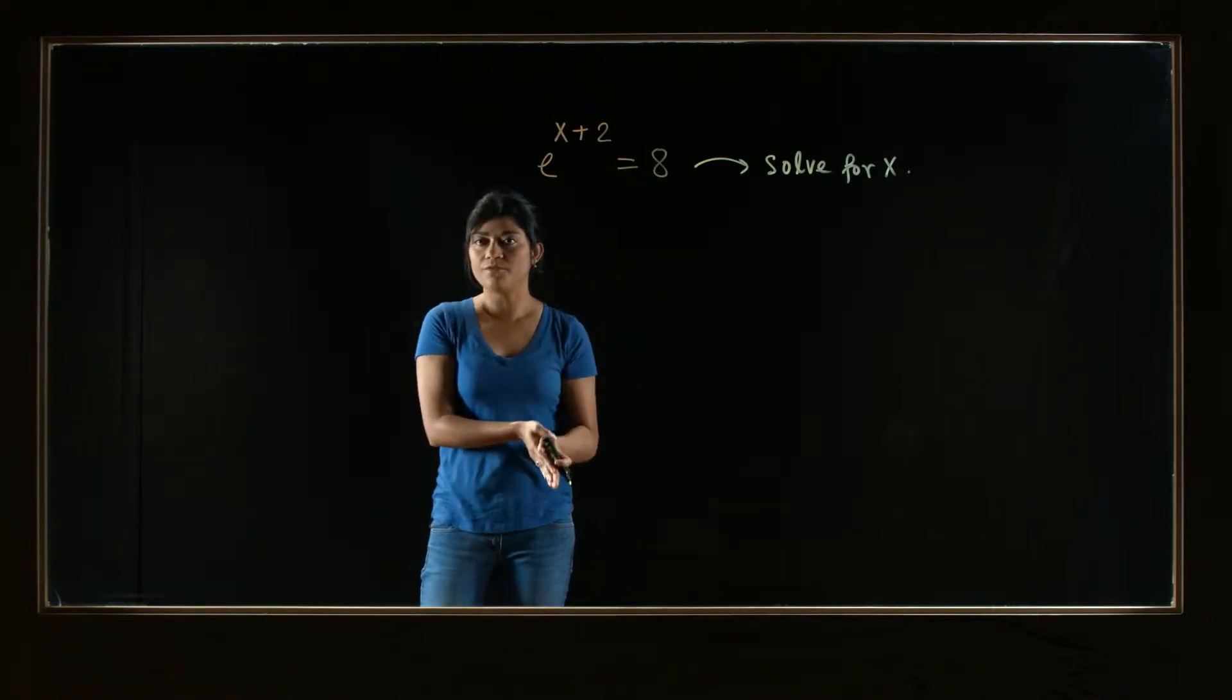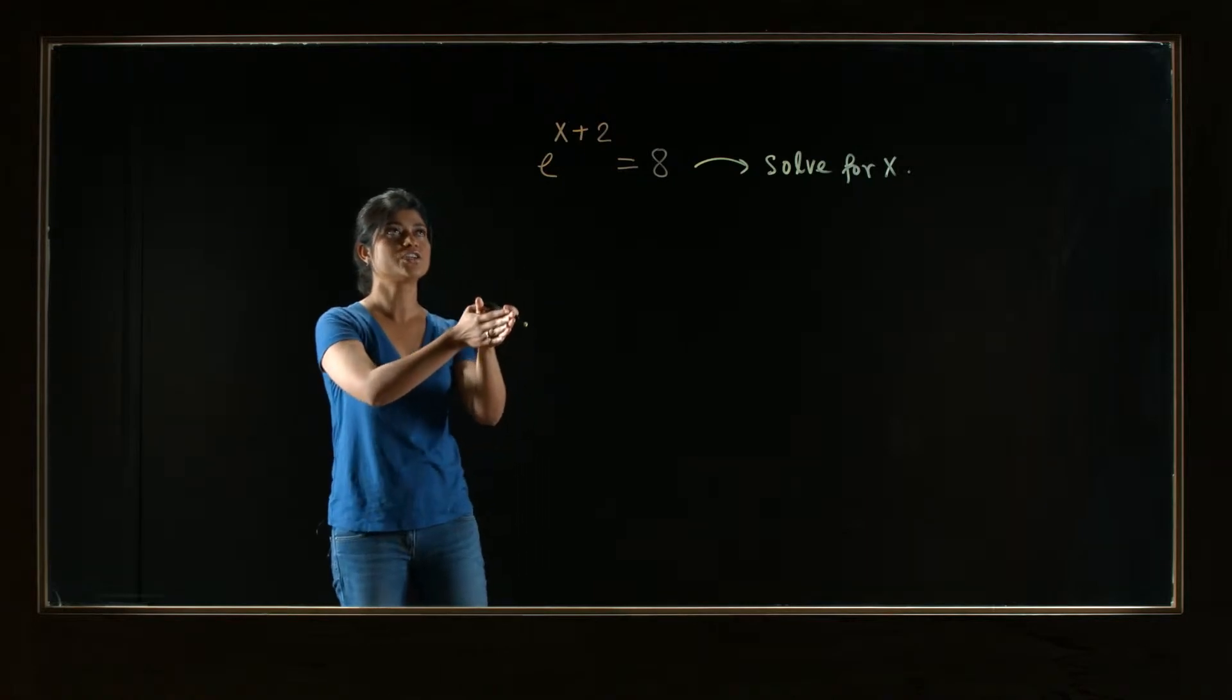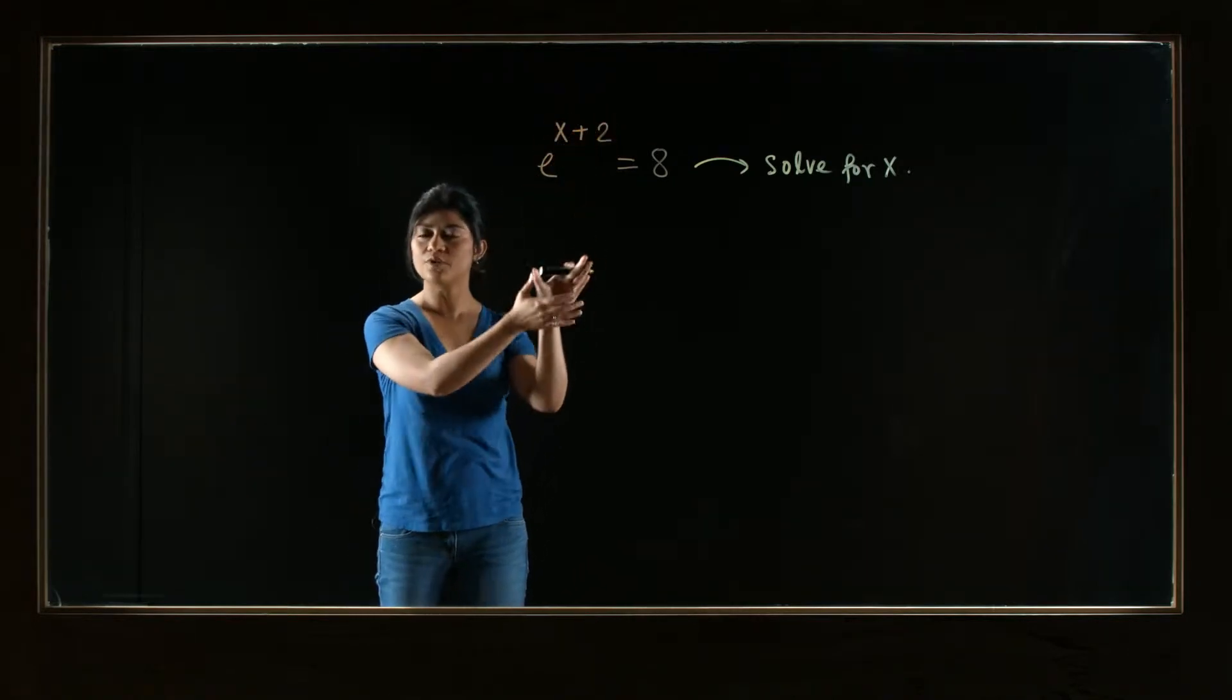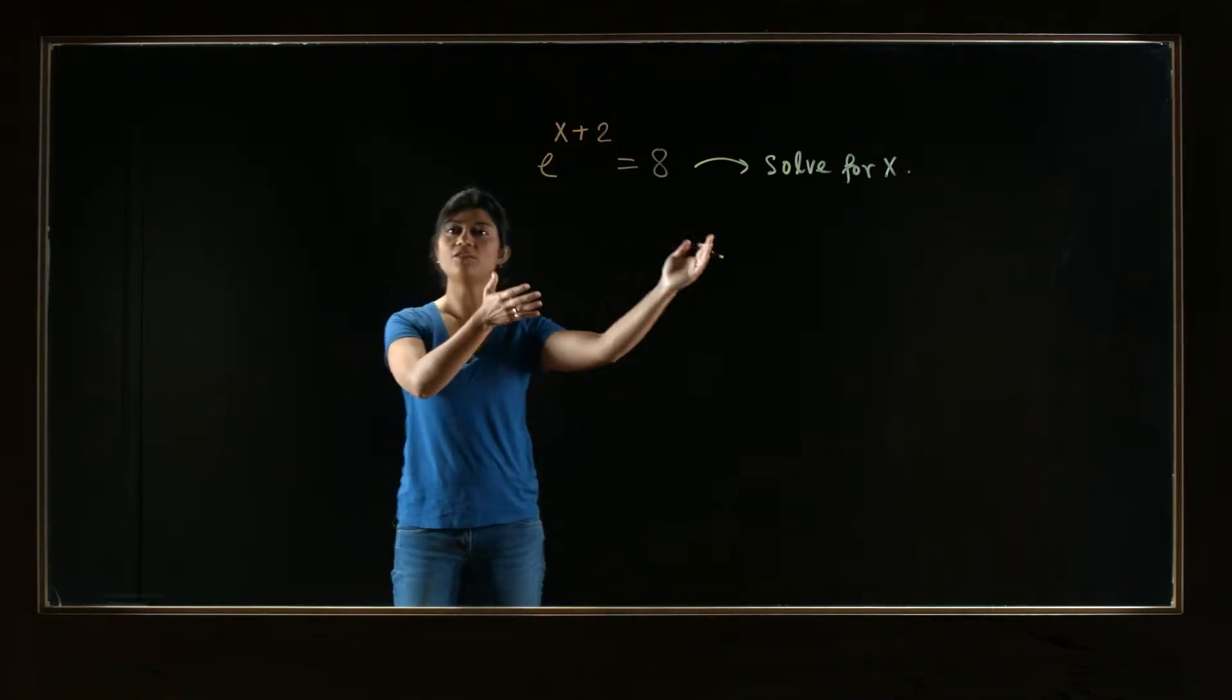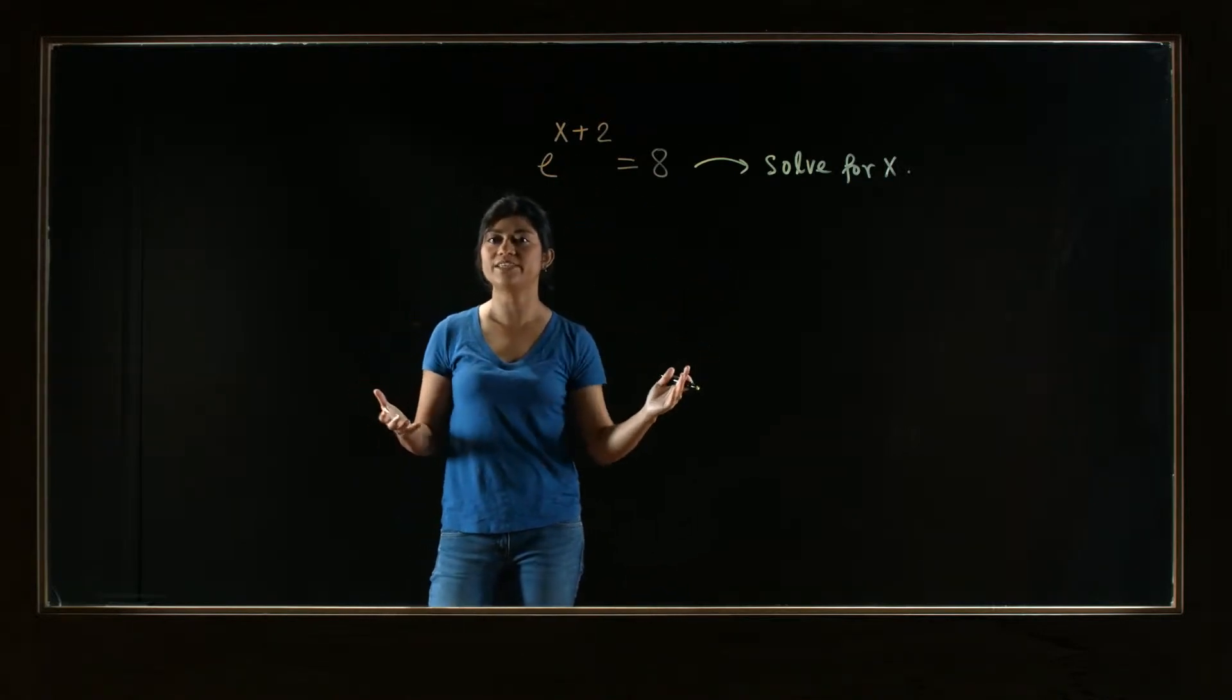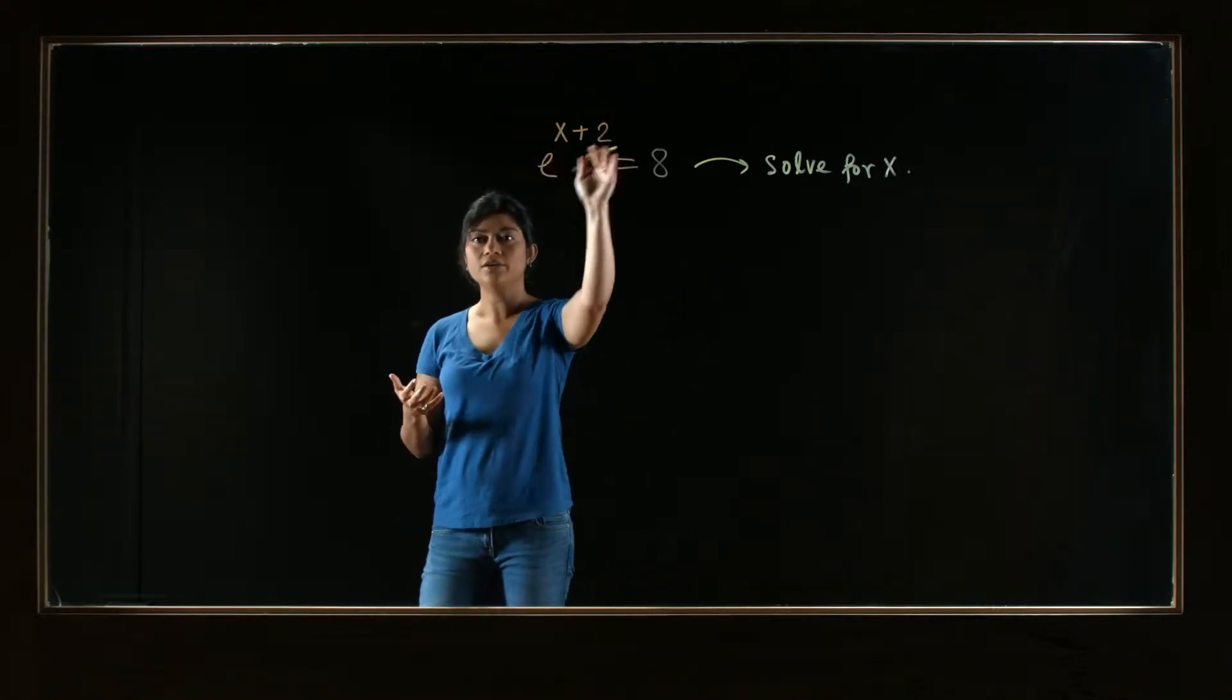So in order to solve for it, we have to first bring the x down from the exponent. Otherwise, we can't solve it. We can't make x free of everything else. It is sitting on the exponent.